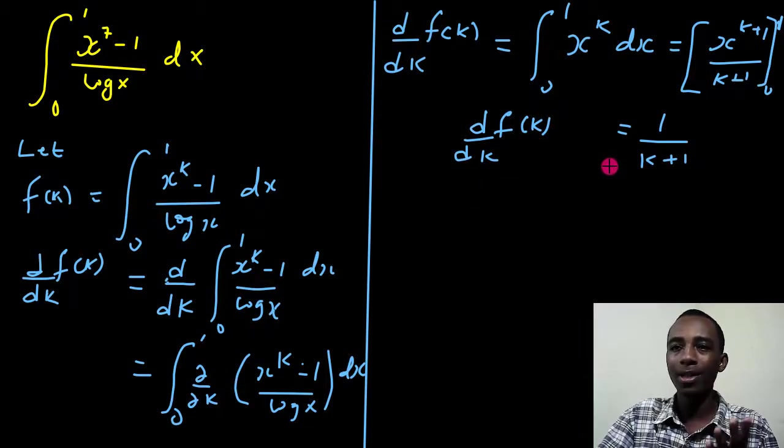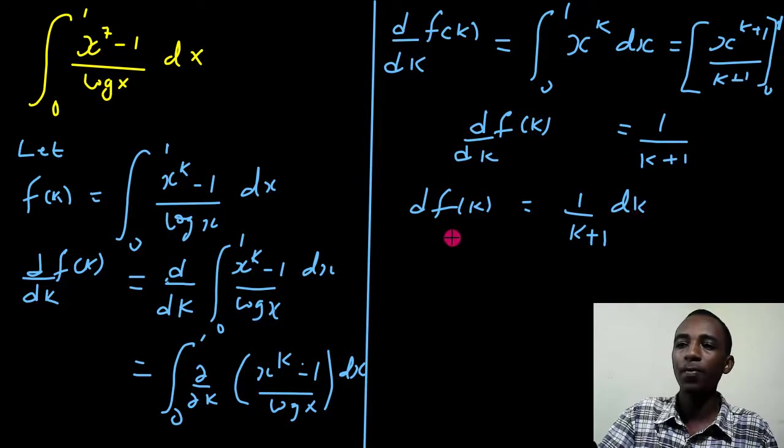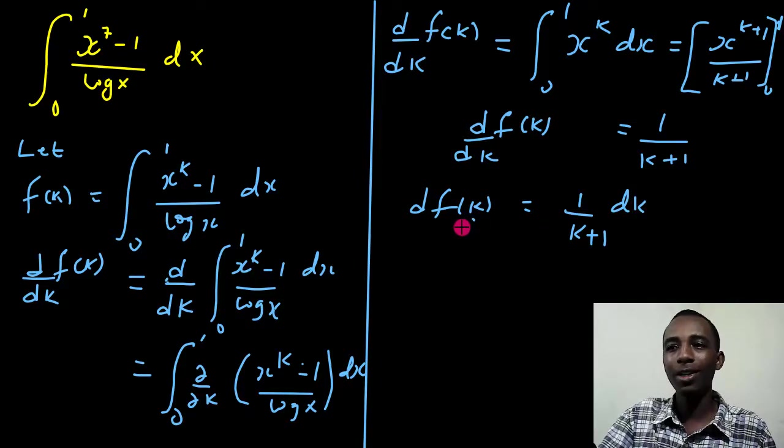All right, so let's multiply dk on both sides. So I have df of k, df of k equals 1 over k plus 1 dk. Okay, so I can now take integrals on both sides.